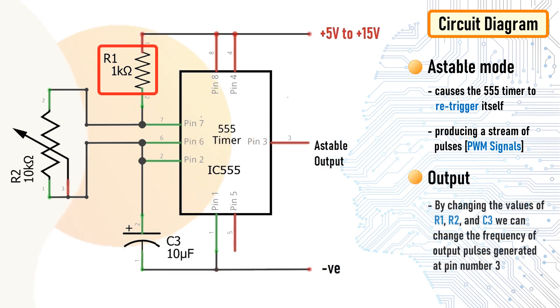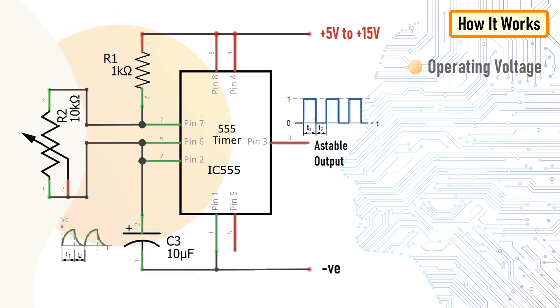Pin number 3 is the output pin. By changing the value of R1, R2 and C3, we can change the frequency of the output pulses generated at pin number 3. The working voltage of the circuit is between 5 to 15V DC.